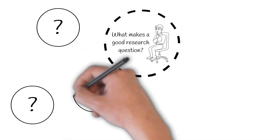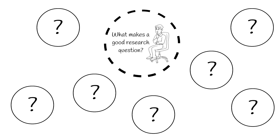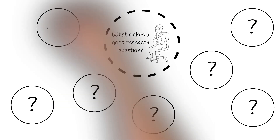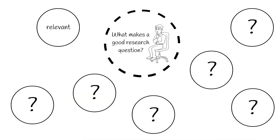I can think of seven qualities that make a good research question. The first is relevance. Your question has to speak to some broader concern that is worth tackling. That is true whether you're working on contemporary politics or historical sources a thousand years old. Your question should deal with a pressing concern — something that speaks to debates that are not yet settled, or some mystery that hasn't been fully solved.